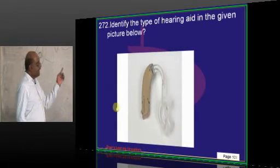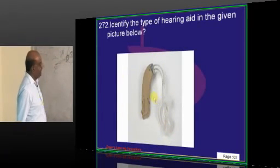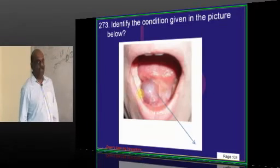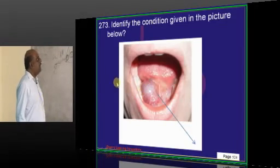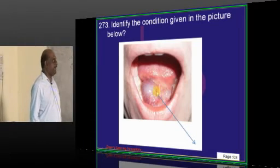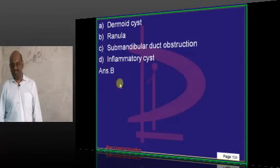Typically, what is the type of the hearing aid that you are able to see in this picture? Typically, it is behind the ear kind of hearing aid. In this picture, what do you see? Ranula, which is not a cannula. Retention cyst.